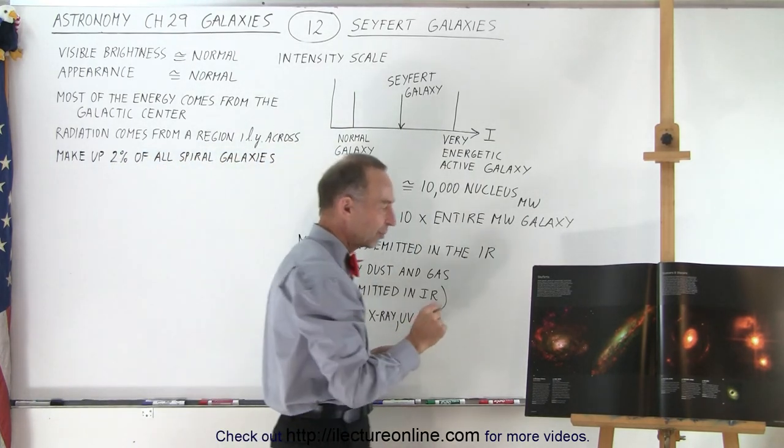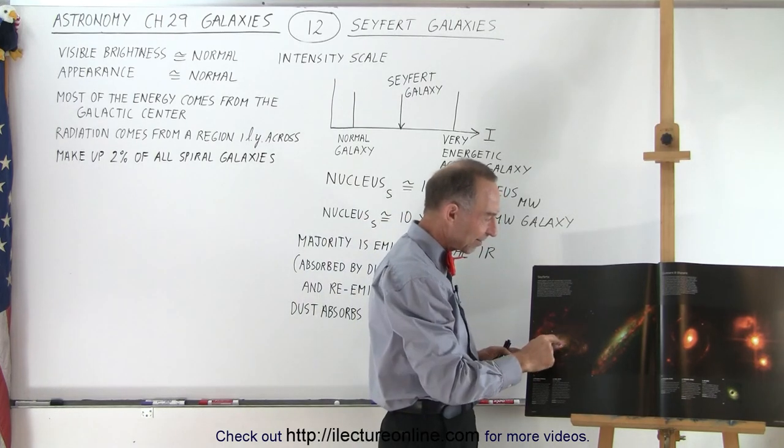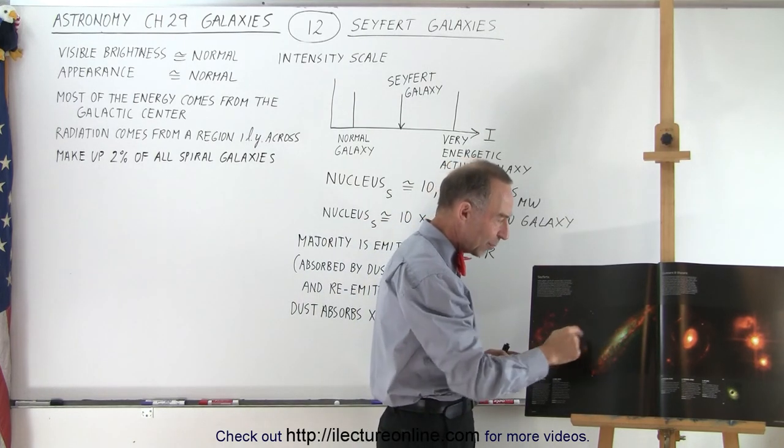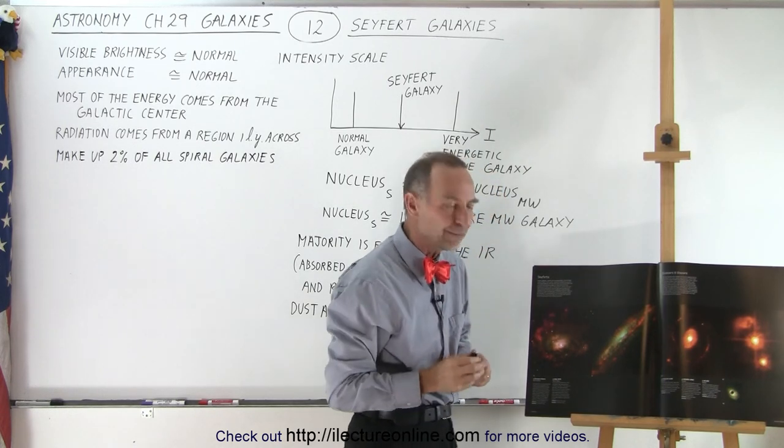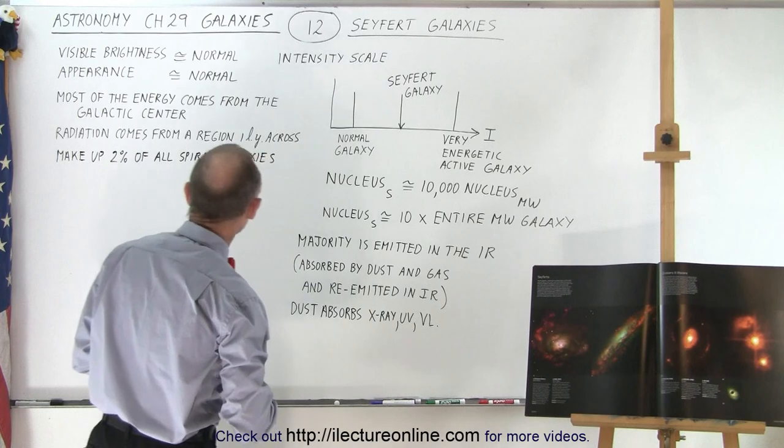Notice we have a couple of pictures up here of some Seyfert galaxies, and notice that the center of the galaxy tends to be unusually bright. A lot of the energy comes from the center of the galaxy. And why is that? Well, let's take a look over here.